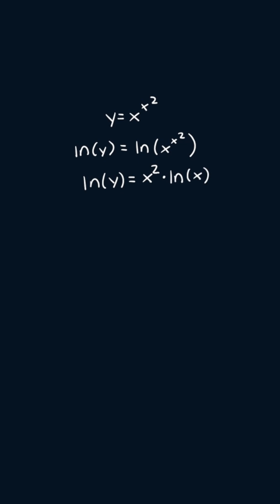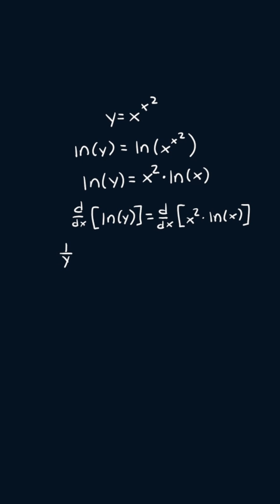Now we can differentiate both sides with respect to x. The left side becomes one over y times dy/dx. The right side becomes two x times the natural log of x plus x squared times one over x, using the product rule.